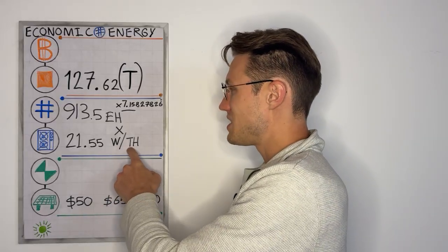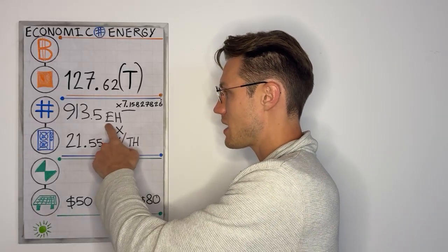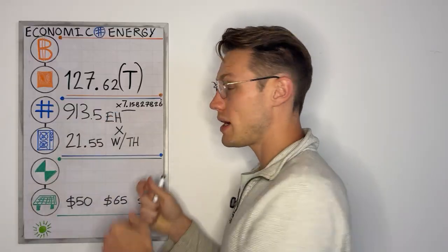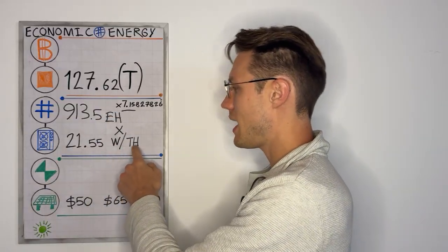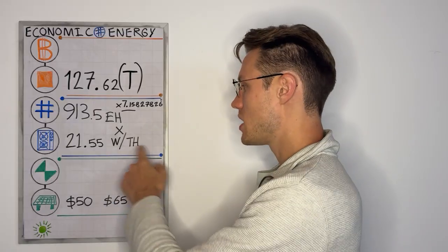Now, this is watts per terahash. And as you can see, this is exahash. So what you can do is you multiply up both sides by a factor of a million. So you get megawatts per exahash. So it's the same thing as watts per terahash.